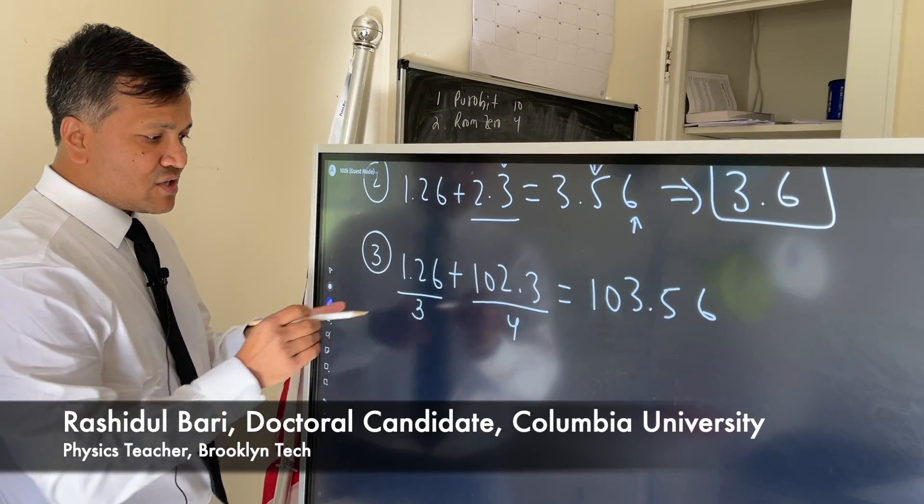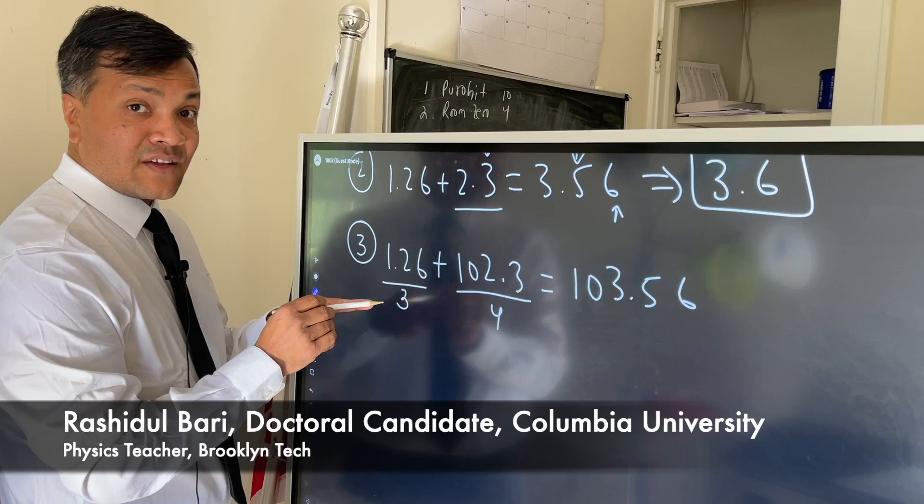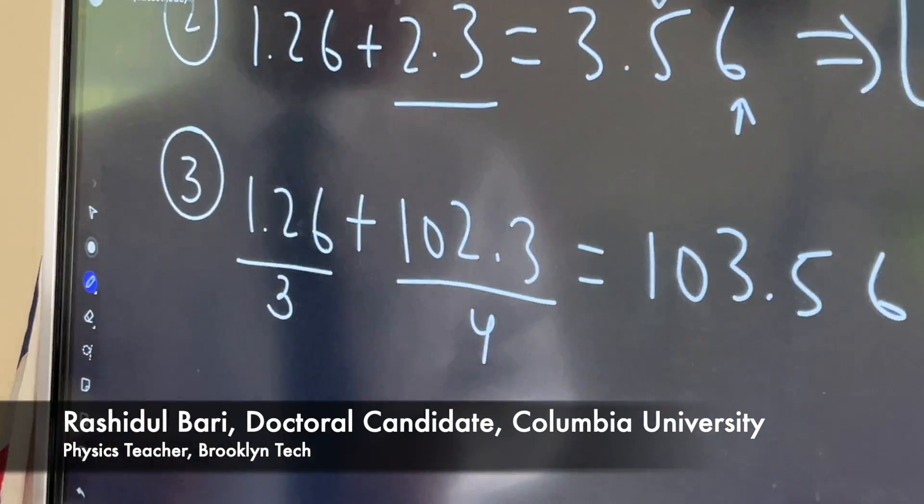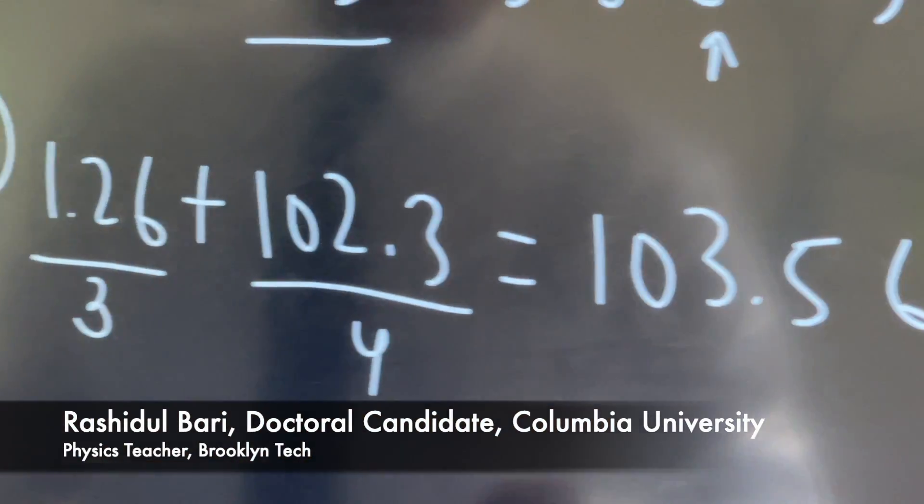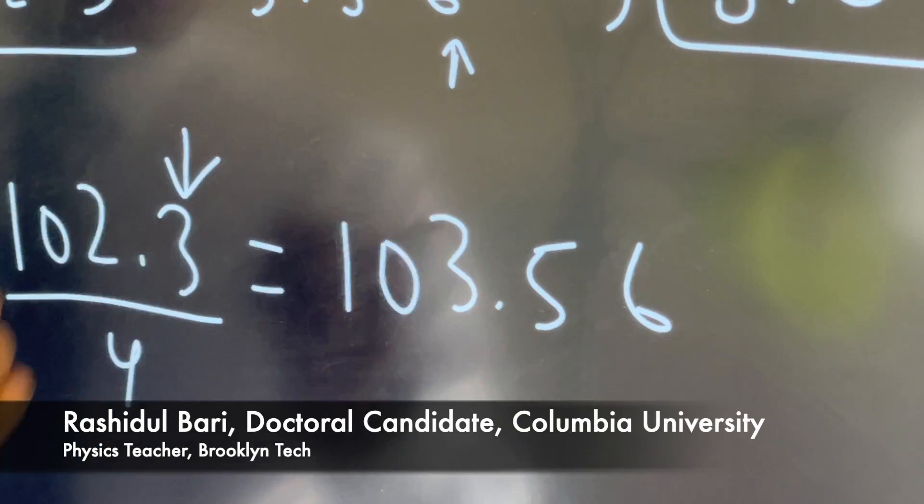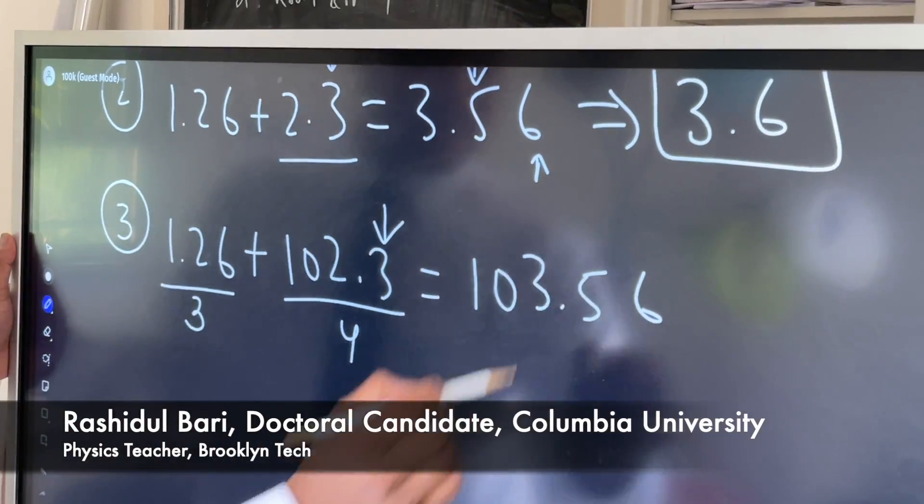So don't decide by number of sig figs. This one has fewer sig figs but is most precise. In our final answer, we have to use the least precise one. The target is tenths, so we should add one to our target, so 103.6.